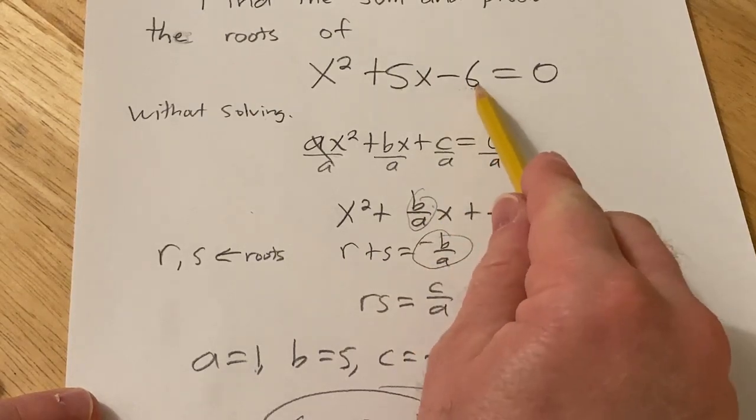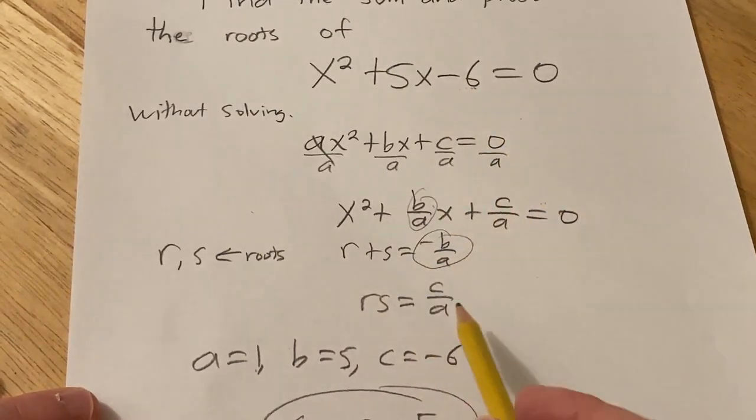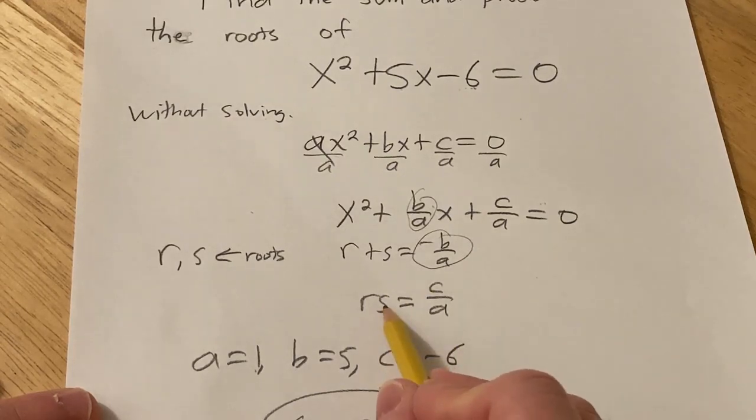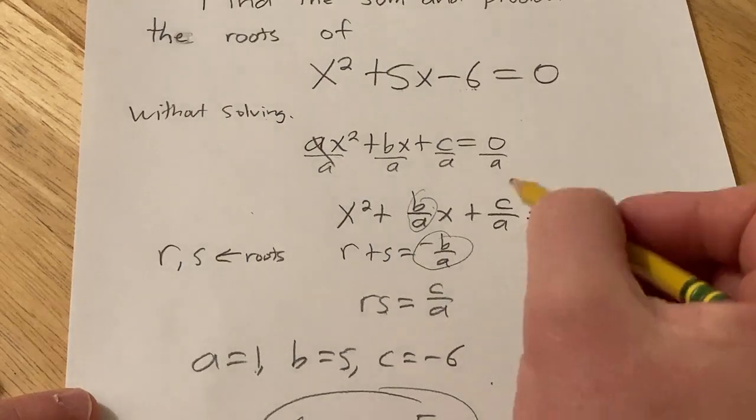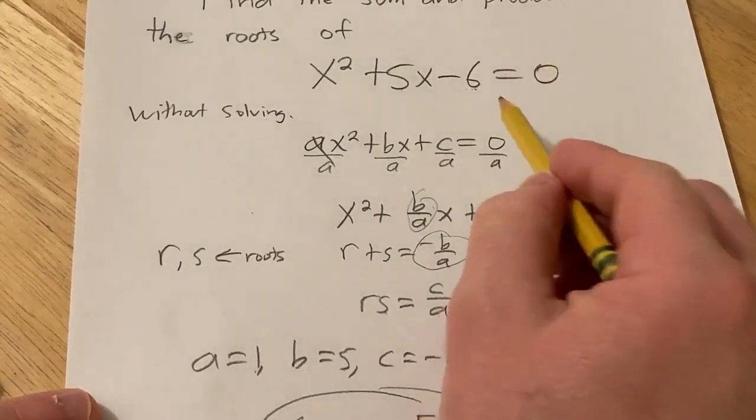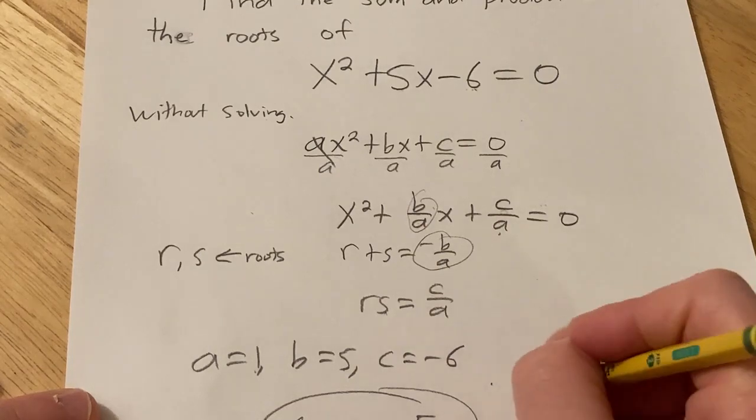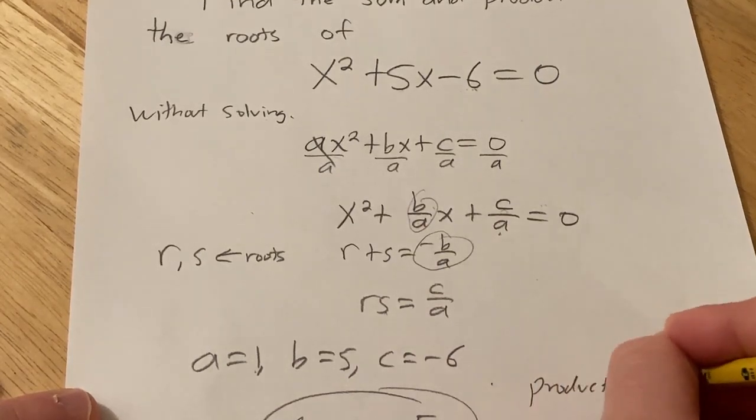and the product is this, right, negative 6, or you could just basically do r times s. In this case, well we don't know what they are, but it would be c over a, so in this case it would just be negative 6 over 1, so negative 6. So the product would be negative 6.